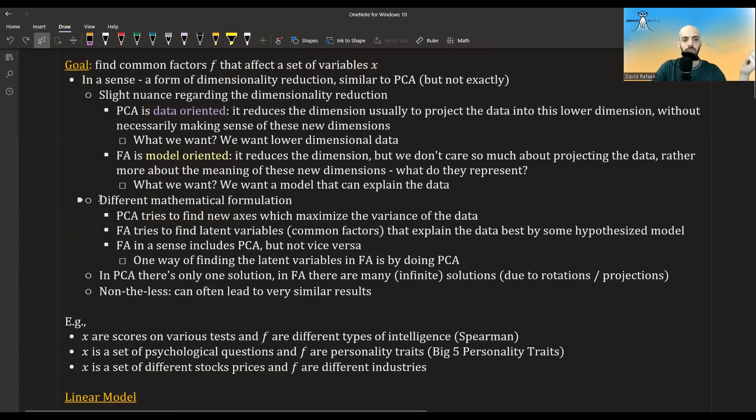In addition, there's also, of course, different mathematical formulations. So PCA tries to find new axes which maximize the variance of the data. Factor analysis tries to find latent variables, known as common factors, that explain the data best by some hypothesized model.